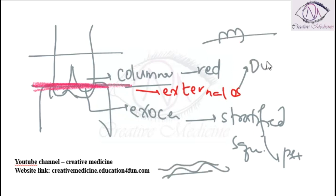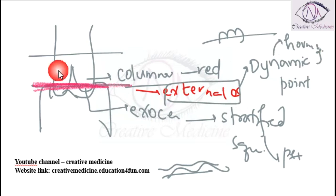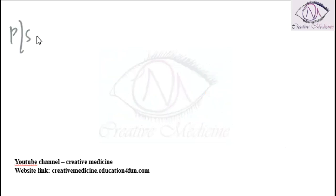This transformation zone is the junction of columnar epithelium of the endocervix and the squamous epithelium of the exocervix. It is a dynamic point because it depends on the hormonal influence and the age of the patient. On per speculum examination, it appears pale.